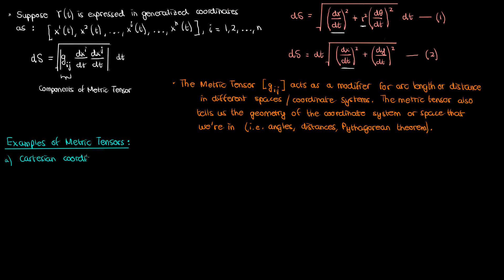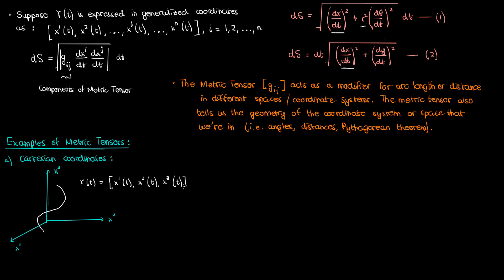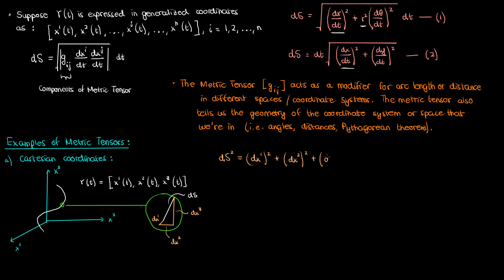We'll start with Cartesian coordinates in three dimensions. I'll draw a set of axes and call my Cartesian coordinates x super 1, x super 2, and x super 3 in place of the usual x, y, and z. Suppose I have a three-dimensional curve gamma defined using parametric equations of x super 1, x super 2, and x super 3 in terms of some parameter t, and I want to find its arc length by zooming in on an infinitesimally small segment ds. In this rectangular coordinate system, ds would be defined using the elements dx1, dx2, and dx3. Using the three-dimensional version of the Pythagorean theorem, ds squared equals dx1 squared plus dx2 squared plus dx3 squared.